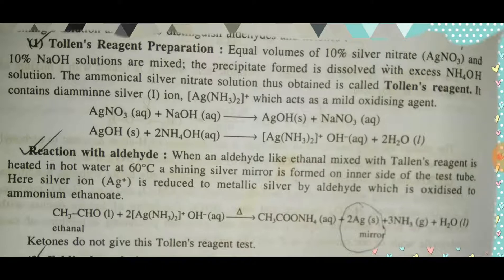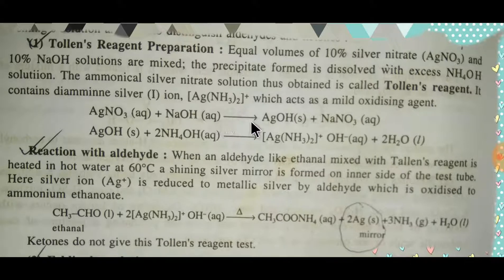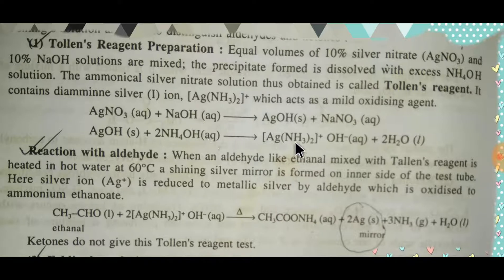Our target is to prepare Tollens' reagent. Equal volumes of silver nitrate and sodium hydroxide are mixed together, and we get silver hydroxide and sodium nitrate. Silver hydroxide forms here as a solid precipitate. Then, if we dissolve this silver hydroxide with excess ammonium hydroxide, we get the complex compound diamine silver hydroxide, which is called Tollens' reagent.